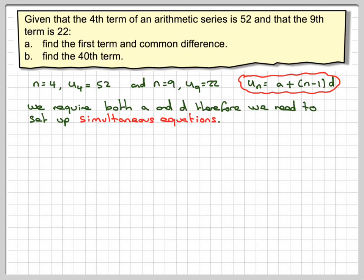So you need to set them up first. We've got 52, using this formula here, is equal to the first term that we don't know plus (4-1) times d, and that can be simplified to a + 3d = 52. We call that equation 1.